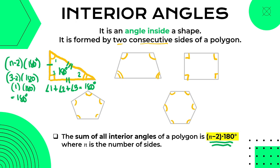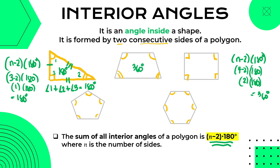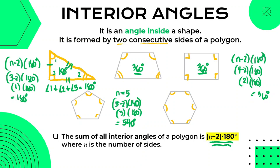Kapag quadrilateral naman, which has four sides, we use the formula: four minus two is two, times 180, giving us 360 degrees. That means the sum of all angles of any quadrilateral is 360 degrees. Next is a pentagon which has five sides: five minus two times 180 degrees gives us 540 degrees. While the last figure has six sides: six minus two times 180 degrees gives us 720 degrees.